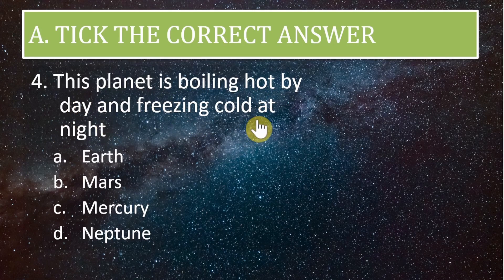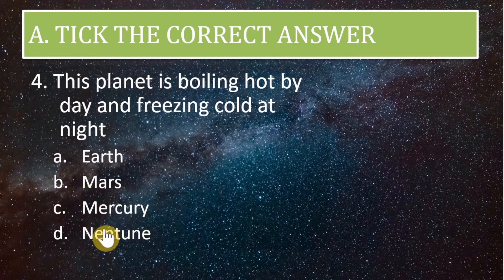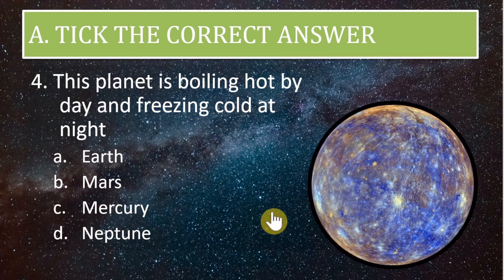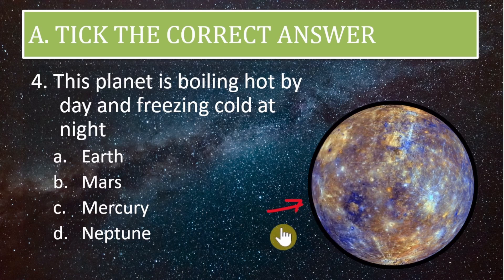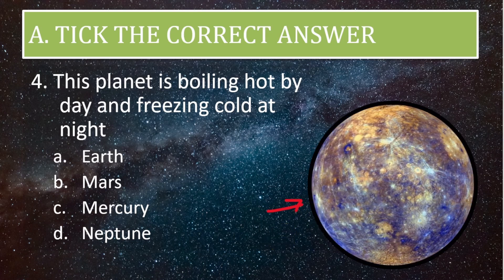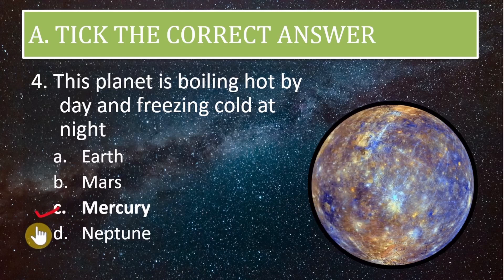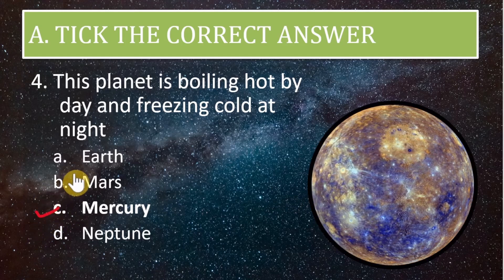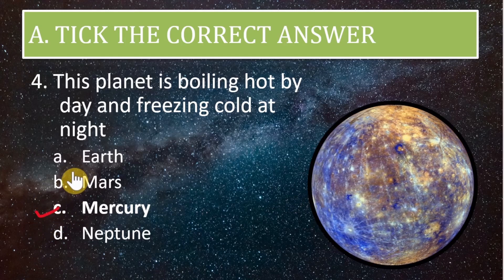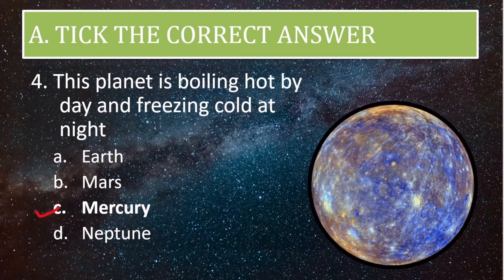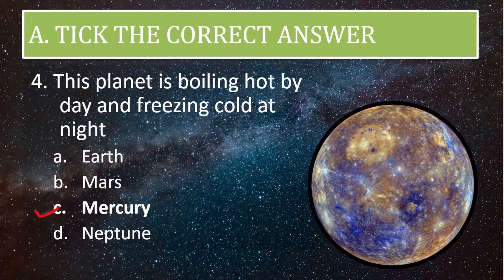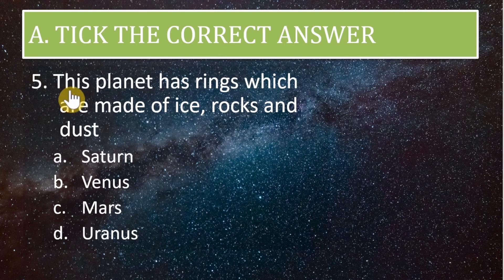Fourth question: this planet is boiling hot by day and freezing cold at night. The options are Earth, Mars, Mercury, or Neptune. The correct answer is Mercury. Mercury is very hot during the daytime and freezing cold at night.